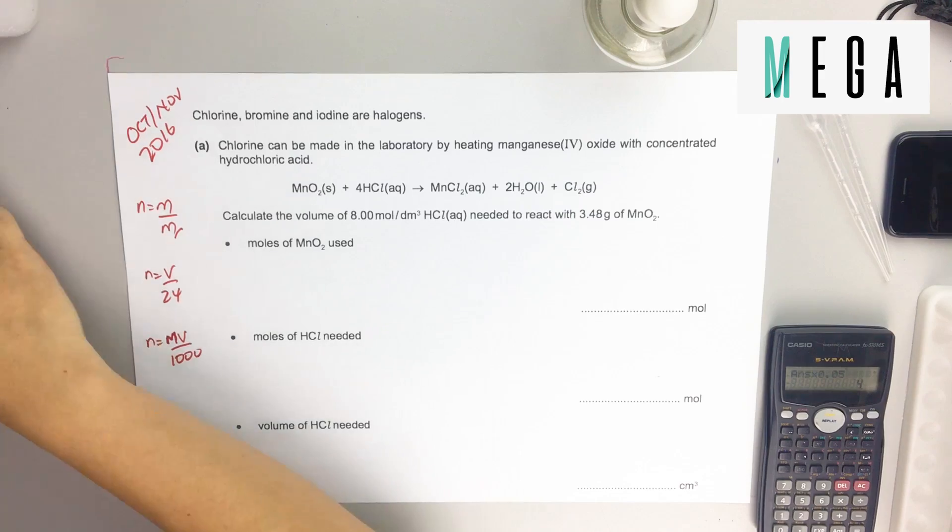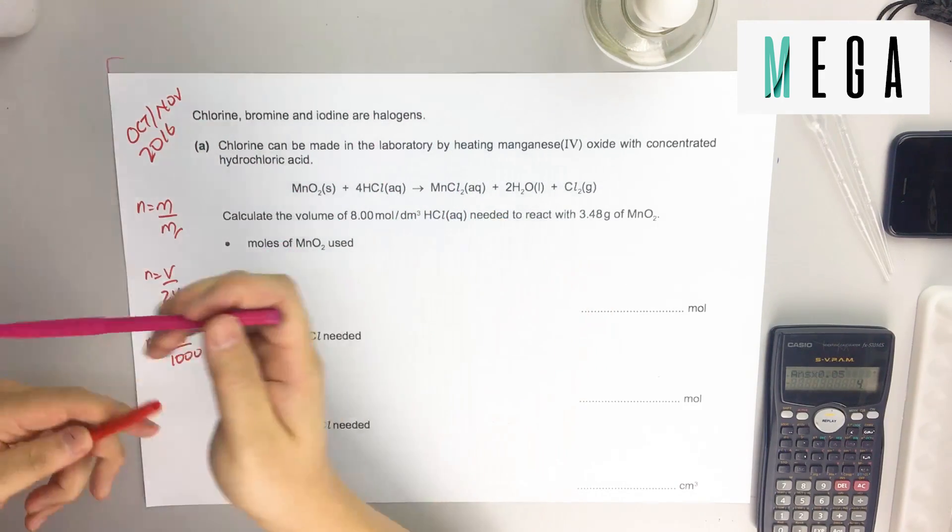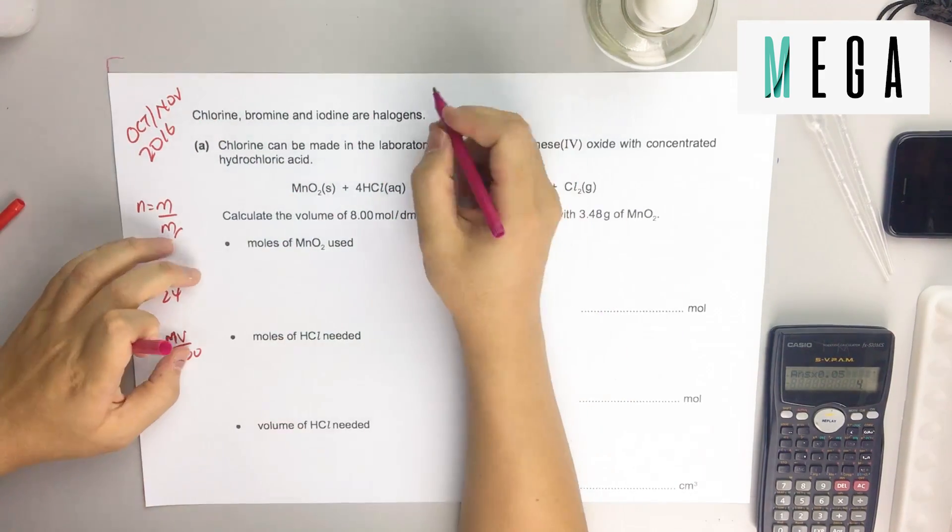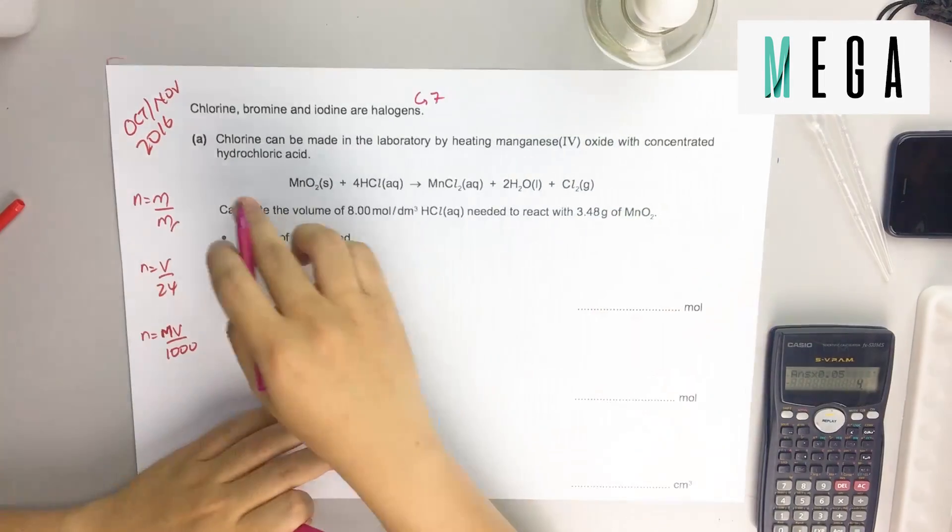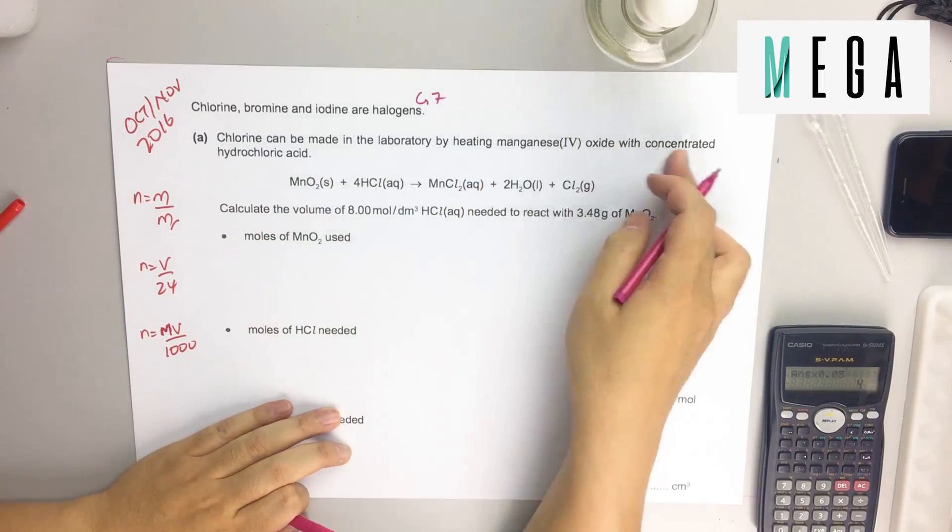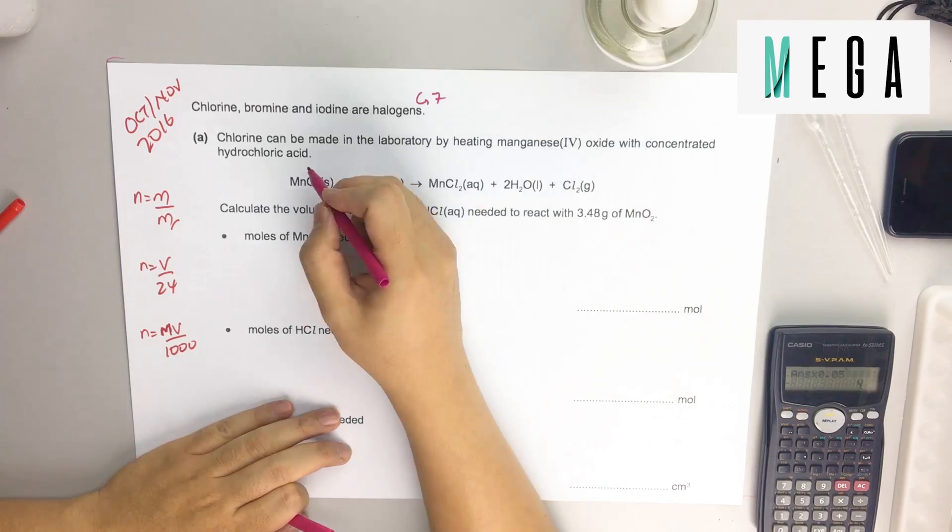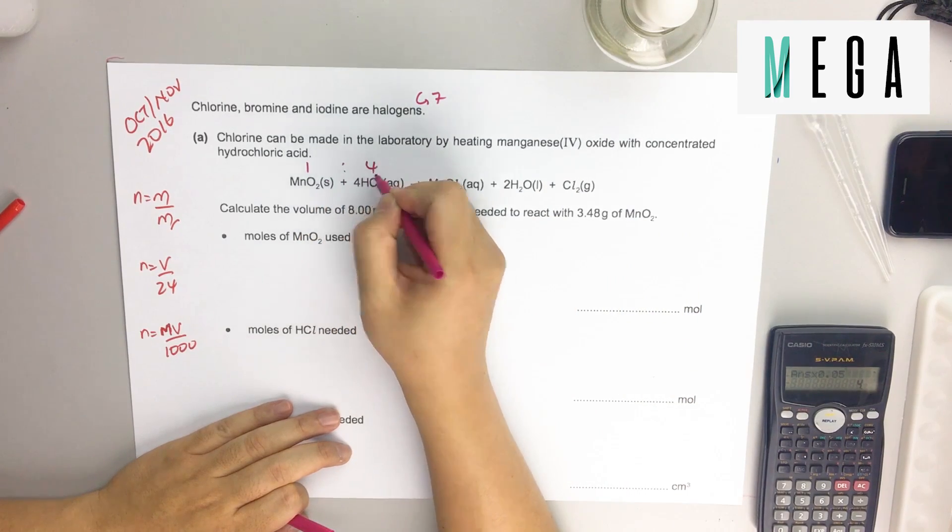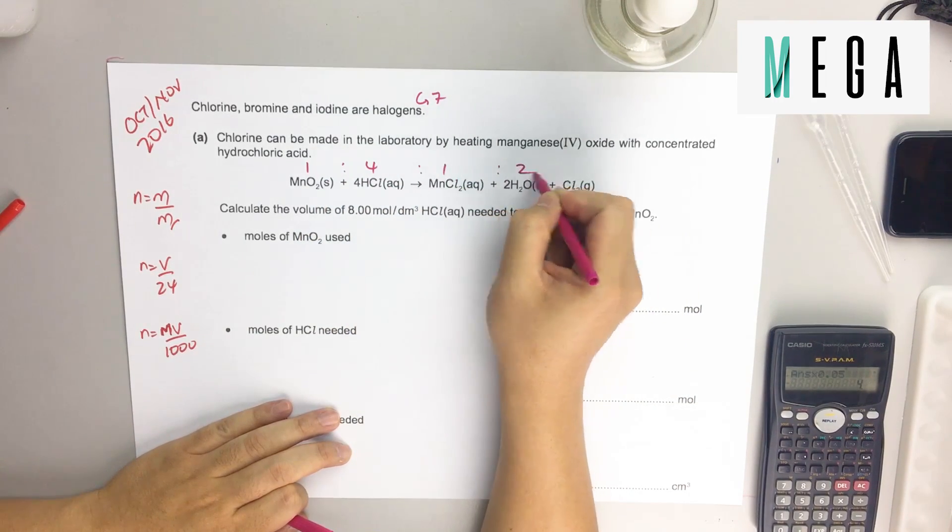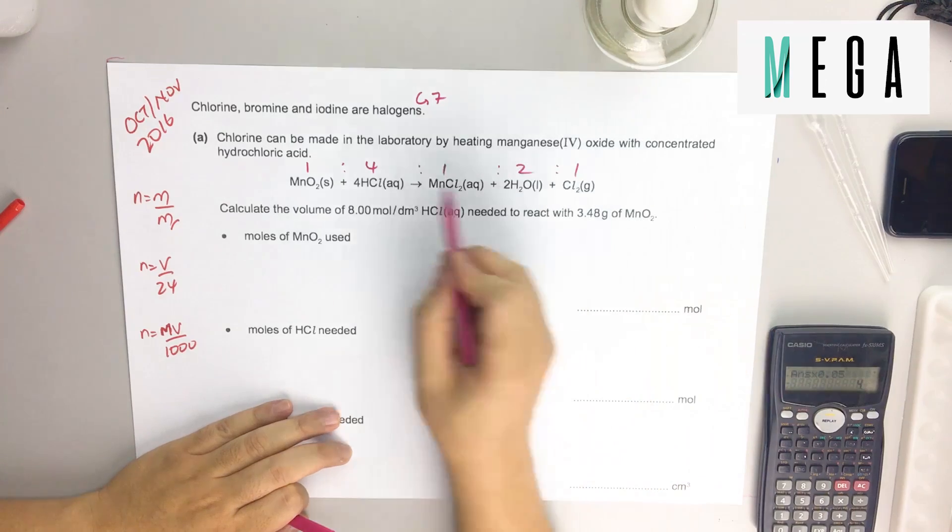Okay, let's start. They say chlorine, bromine, and iodine are halogens, so we can revise a bit - halogens are group seven. Chlorine can be made in the lab by heating manganese, and they give you the equation. Once again, before you start, it's good to write the ratio: 1 ratio 4 ratio 1 ratio 2 ratio 1. How do you get the ratio? Use the number in front.